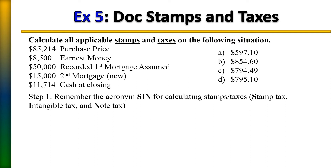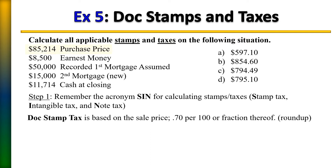Let's start out with calculating the document stamp tax. The document stamp tax is based on the sale price. Here we have a sale price of $85,214 and it's based on 70 cents per 100 or fraction thereof, and we always want to round up when we do these calculations.